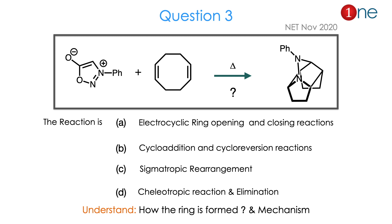Then question number 3. The starting material is a heterocyclic ring with an anion and cation containing three heteroatoms — nitrogen, nitrogen, and oxygen — with a phenyl group on one nitrogen. You react it with cyclooctadiene containing two alkenes by heating. The product is a polycyclic compound with two fused five-membered rings and a bridging nitrogen bearing phenyl. The question asks what reaction occurred: electrocyclic ring opening, cycloaddition, sigmatropic rearrangement, or cheletropic reaction and elimination. The answer is B.